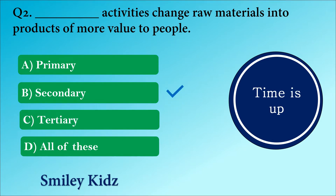The right answer is option B. Secondary. Secondary activities change raw materials into products of more value to people.